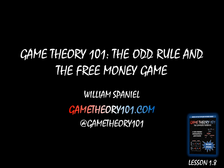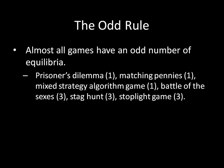So let's start off with the odd rule. Almost all games have an odd number of equilibria. We've seen this in some of the games that we've covered so far. The Prisoner's Dilemma had one equilibrium in pure strategies. Matching Pennies and the Mixed Strategy Algorithm game both had just one equilibrium as well — those were both in mixed strategies.